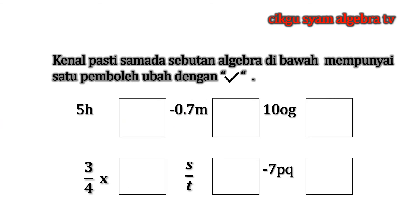Kita bincangkan soalan ini: kenal pasti sama ada sebutan ajibah di bawah mempunyai satu pembeli ubah. Kita lihat semua sebutan ajibah ini tidak sama sebab pembeli ubahnya H, M, O, G, X, S, P, dan Q — sebutannya tidak serupa. Dan perkalinya ada 5, 0.7, 10, 3.4, 1, dan negatif 7.